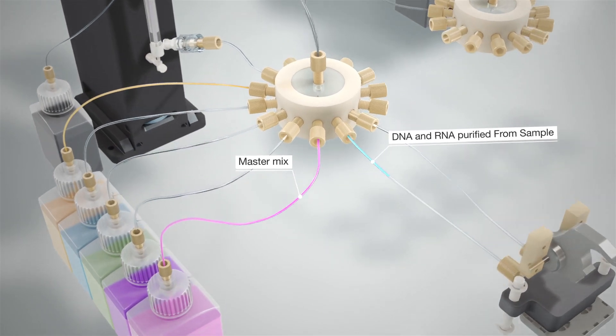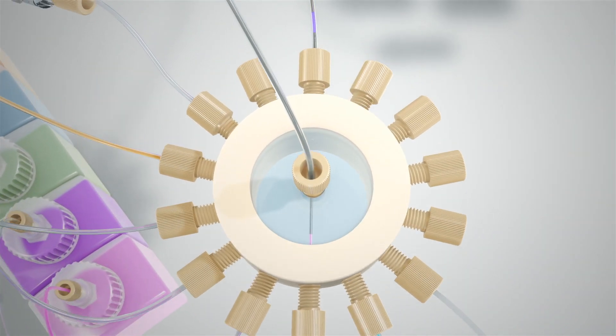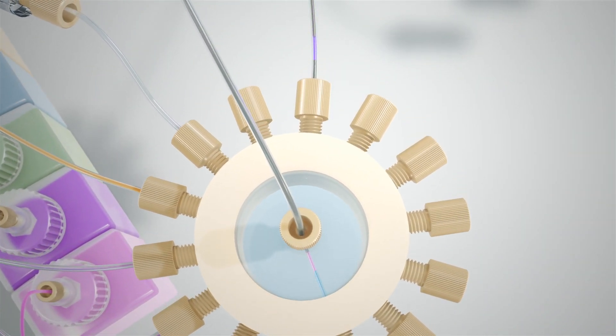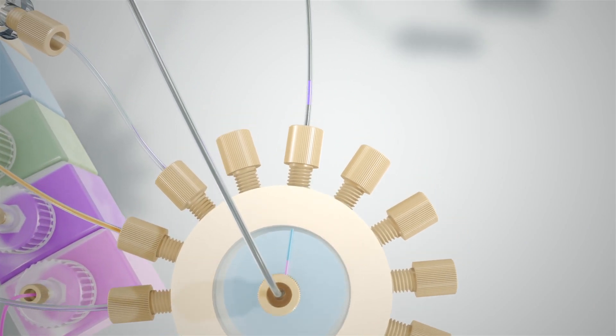The DNA and RNA are mixed with master mix at the valve and then this mixture is directed to the same line containing the previously assembled negative control.